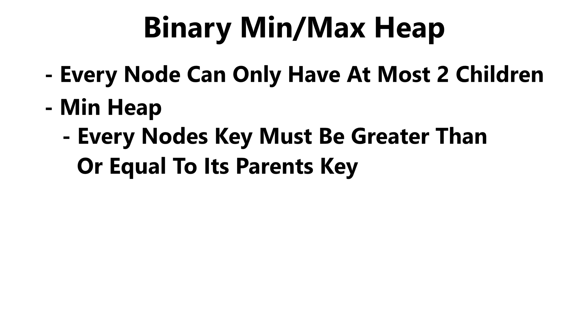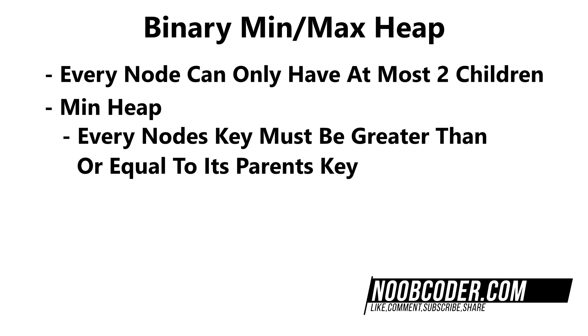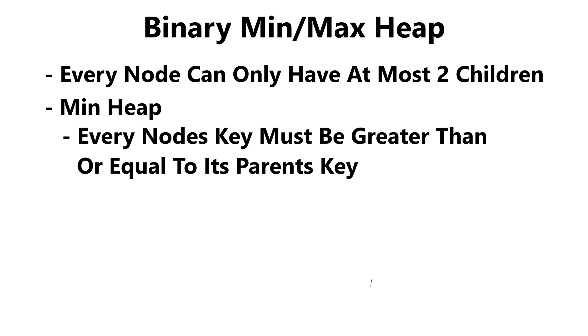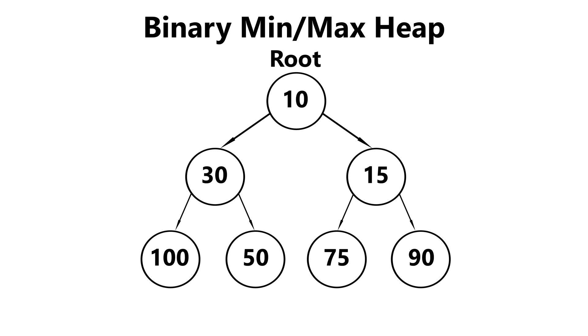In a minimum heap, every node's key must be greater than or equal to its parents. So in other words, your root node should be the smallest key, and the node's keys beneath it should continue to get larger. So if we were to take a look at this minimum heap, for example, you can see that the root node is the smallest key within our heap. And as we go down, our node's keys start to get bigger and bigger.